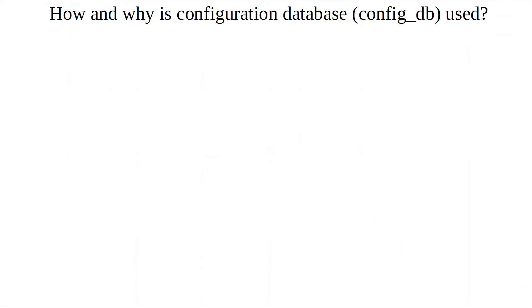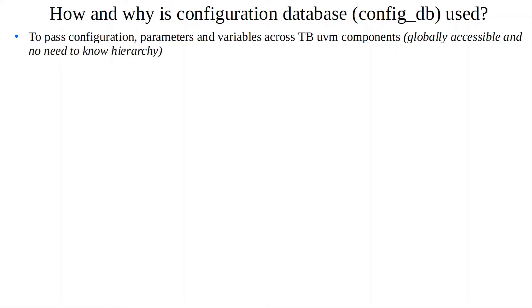The first question is why and how config_db is used. Starting with the why: these days we have very complex test benches and we need a way to communicate across different components within the test bench — to synchronize events, pass interfaces, pass variables, config parameters from one component to another, or have virtual interfaces available to many UVM components. So we need a mechanism to provide handles for that kind of operation, and config_db provides a good way to do so.